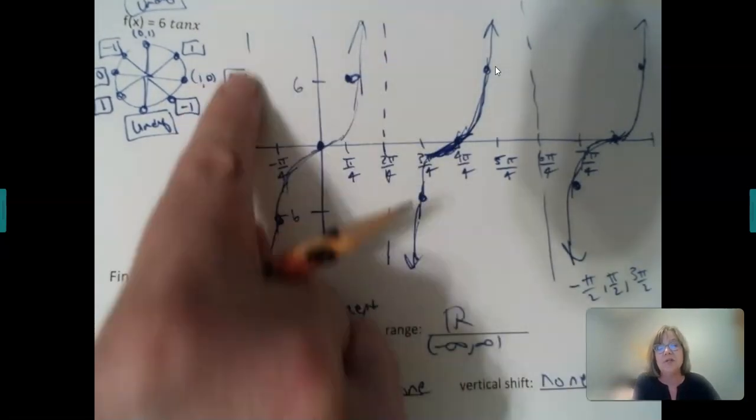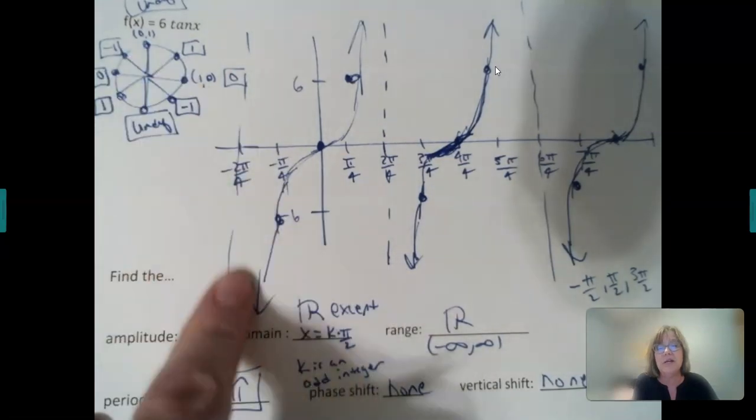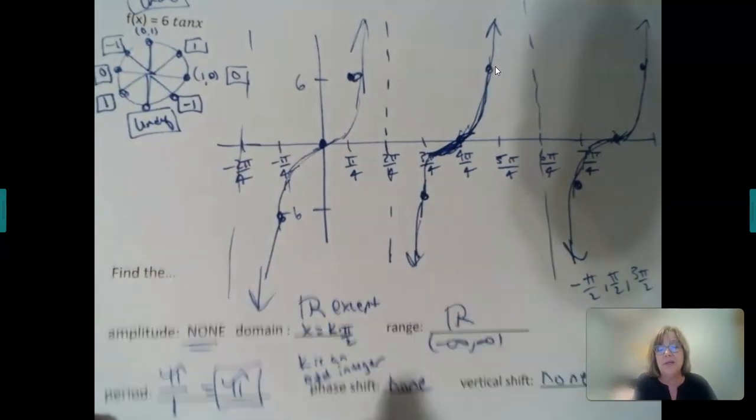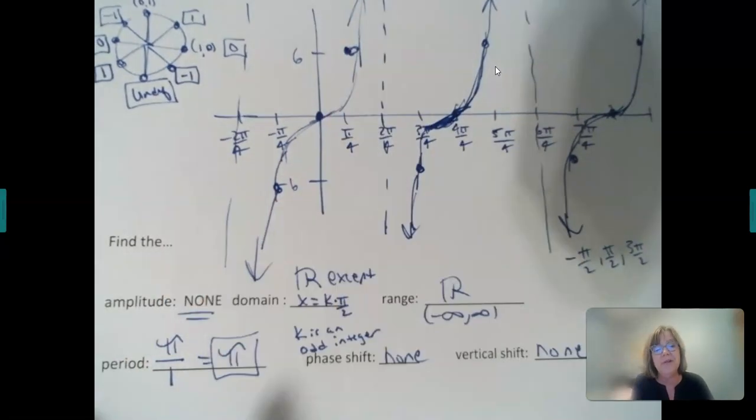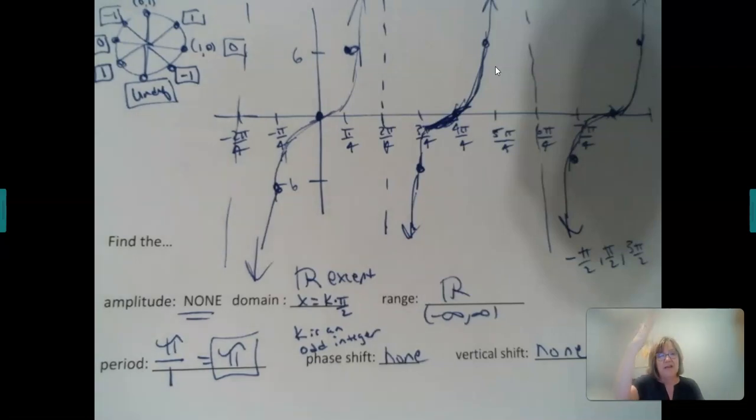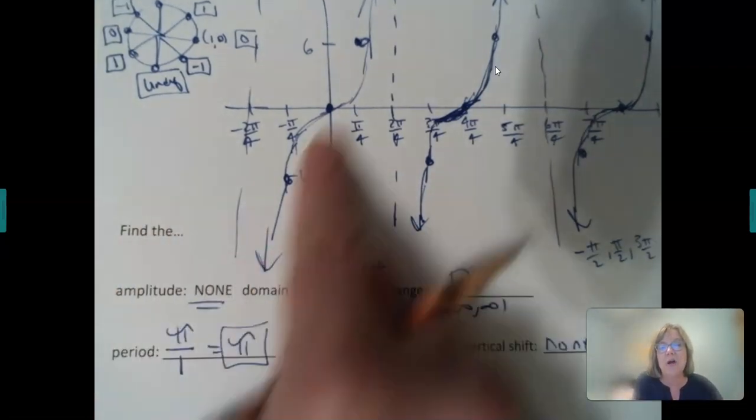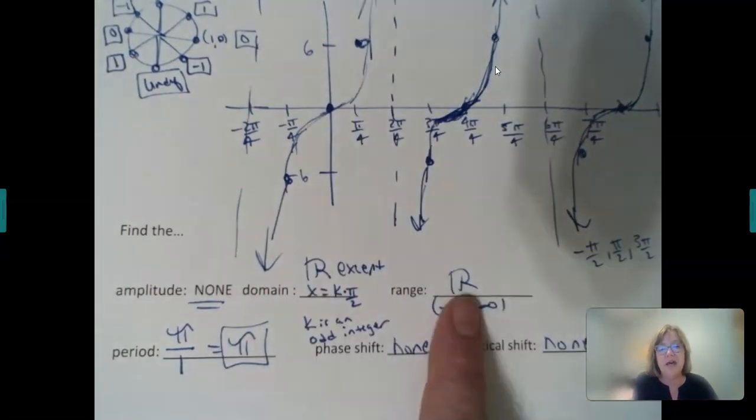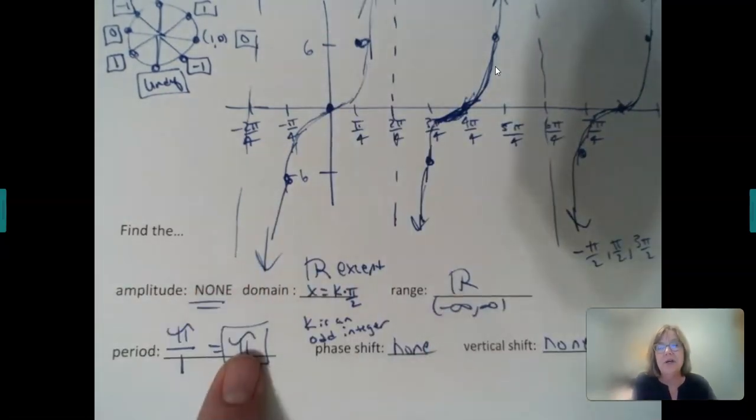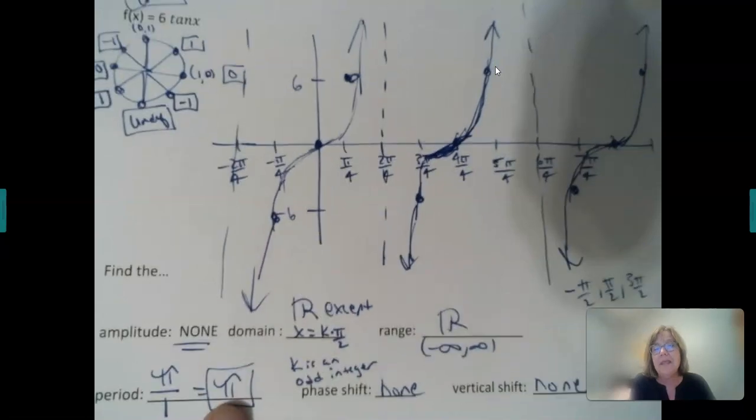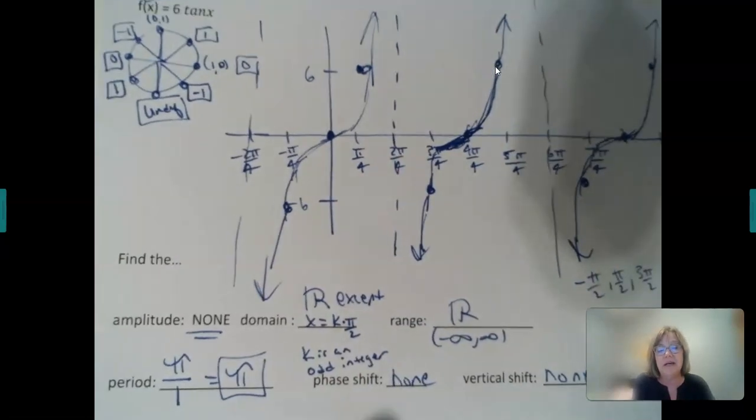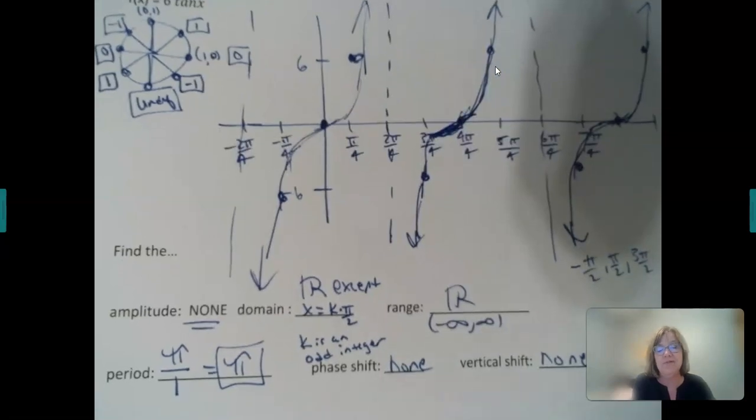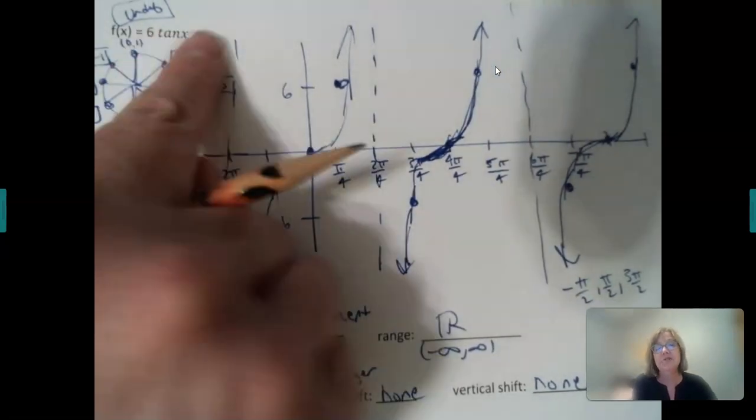Your asymptotes on this are going to be, you can kind of see the pattern. Now, there is no amplitude, because this goes off to infinity. Amplitude is a distance from the mid to the high, there is no, it's infinite, so we don't do that. Range infinite. The period is normally pi for a tangent, and we have nothing on our x that's going to impact that. Phase shift, vertical, none, we didn't do anything.